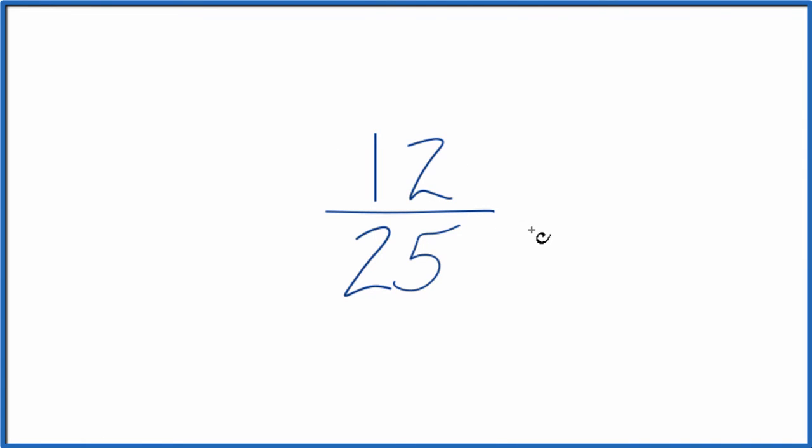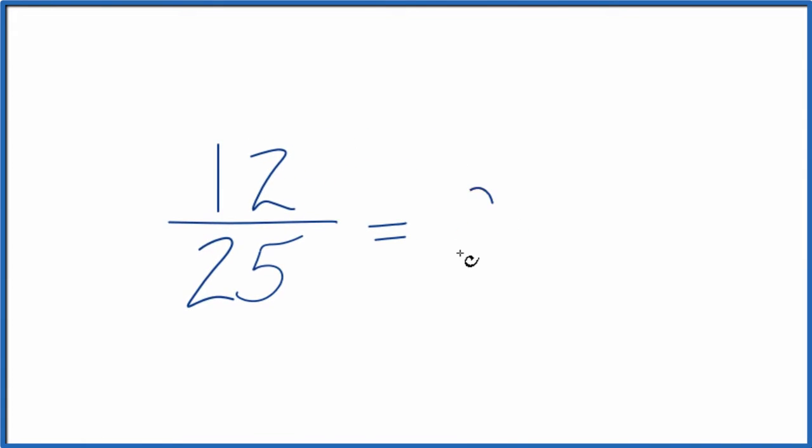You could just take 12, divide that by 25 on your calculator, you'll get 0.48. So that's one way to do it. So the fraction 12 over 25 equals a decimal 0.48. They're the same value, just written differently.